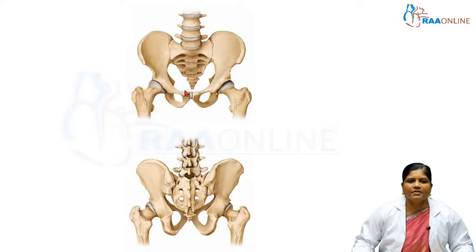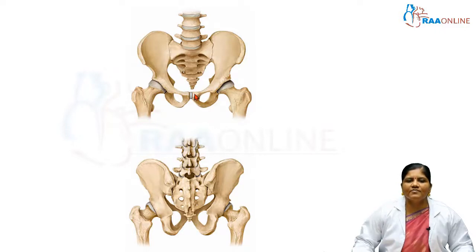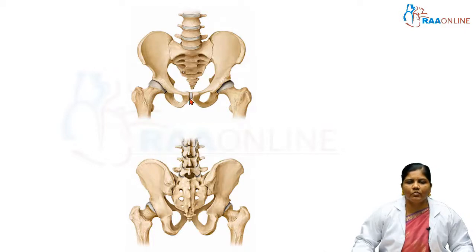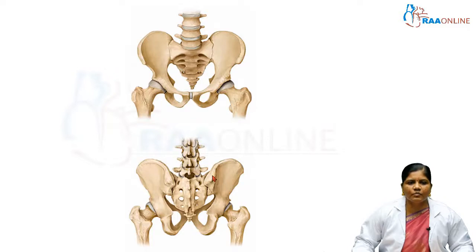The pubic bone has a body of pubis. On the upper surface of the body there is a roughened area called the pubic crest. The lateral most point of this roughened area is called the pubic tubercle. Both sides of the pubic bones meet in the midline as the pubic symphysis. Posteriorly, the ilium meets with the sacrum through the sacroiliac joint.